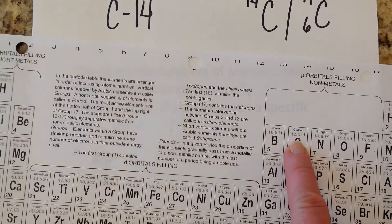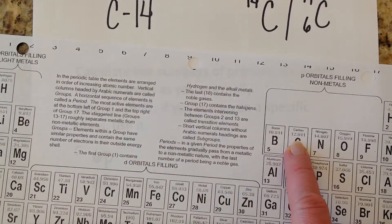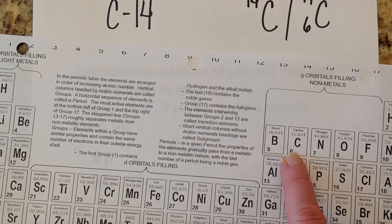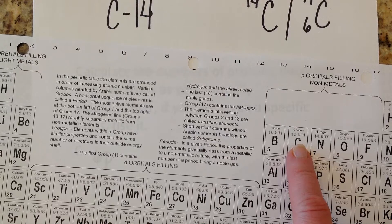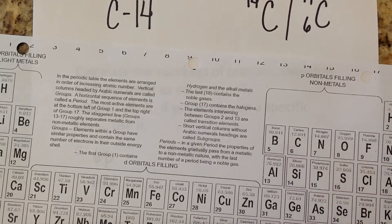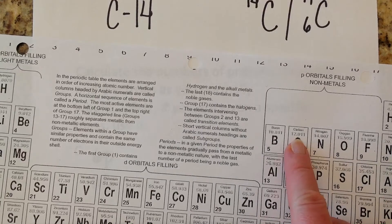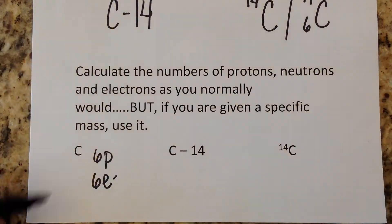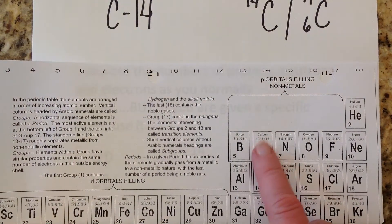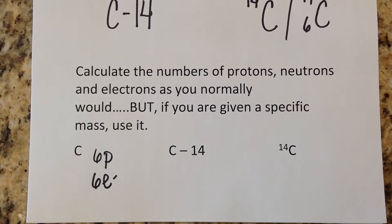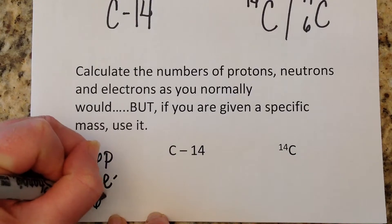12.01 is actually the average atomic mass. Scientists figure out what percentage of carbons have a mass of around 12, around 13, and around 14, and they take a weighted average — kind of like how your homework may be weighted differently than tests when calculating your grade. This gives us what I'd call the standard mass for an element. So 12 minus 6 equals 6 neutrons for plain carbon.